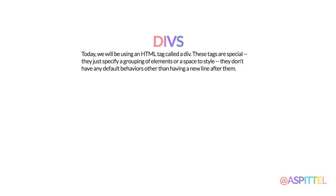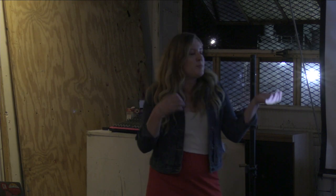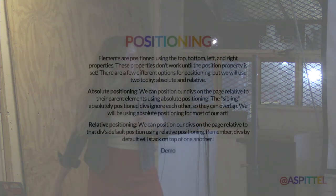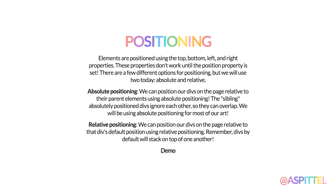Today to make CSS art we're going to be using divs, which are HTML elements that have no special properties — they're just groups of elements. They're not signifying a paragraph or header or anything like that; they're just divs. As far as positioning goes, that's how we move things around on the page. Absolute positioning places something on a page in a specific spot and totally ignores other elements. Relative positioning positions elements relative to one another on the page.